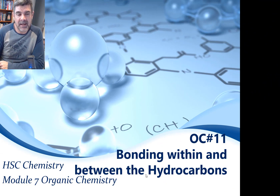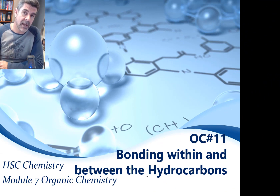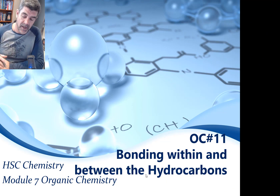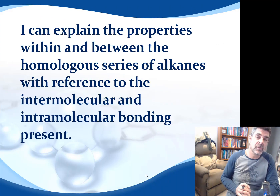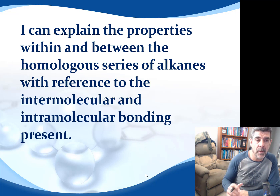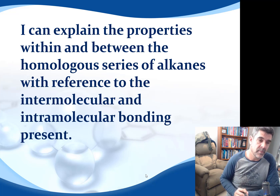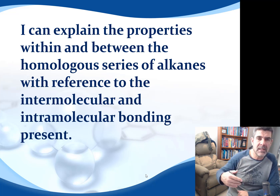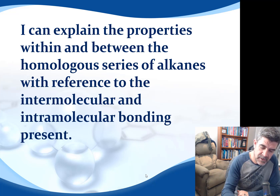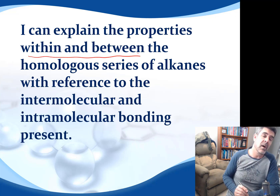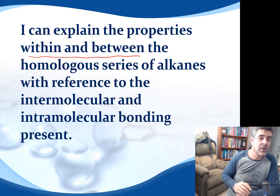Hi students, welcome to HSC Chemistry and Module 7, Organic Chemistry. This is video number 11 and this time we're going to be looking at bonding within and between the hydrocarbon. We've had a bit of an introduction to the key relationships between properties within a homologous series, and also a look at hybridization and how that affects the shape of different molecules and the distribution of atoms around a central carbon. So now we want to extend that to look at differences both within and between members of homologous series with reference to intermolecular and intramolecular bonding present.